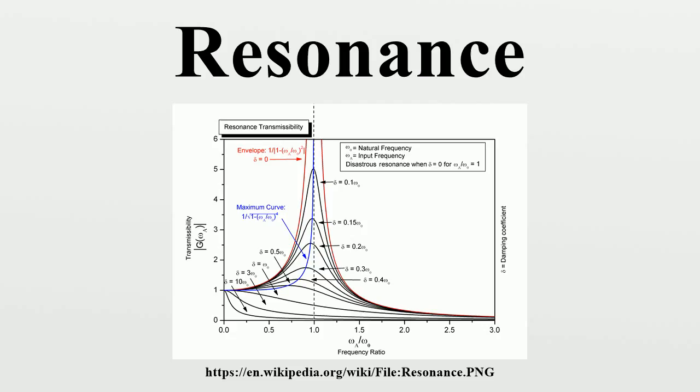Resonant systems can be used to generate vibrations of a specific frequency or pick out specific frequencies from a complex vibration containing many frequencies. The term resonance originates from the field of acoustics, particularly observed in musical instruments, when strings started to vibrate and produce sound without direct excitation by the player.